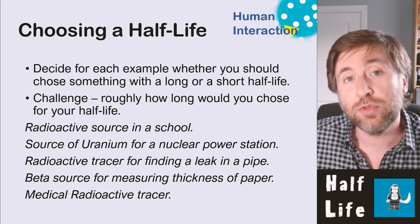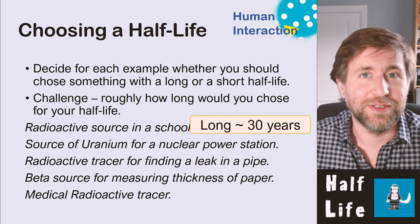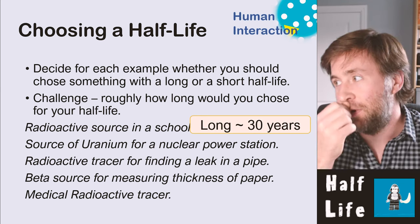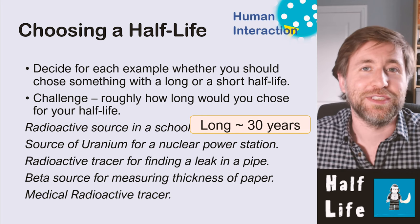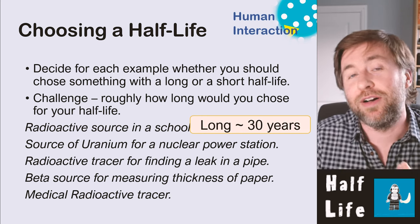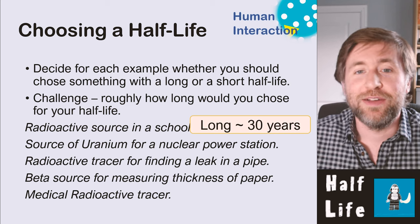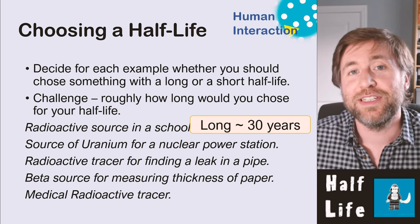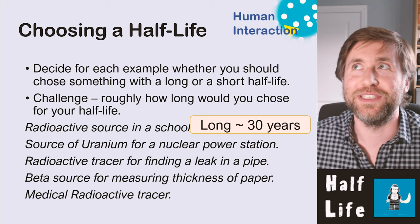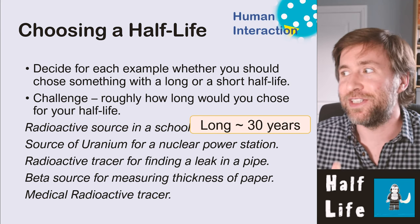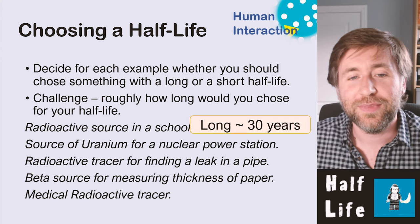For a radioactive source in a school, you'd want a long half-life — somewhere around 30 years — long enough to last for a good number of years. Most radioactive sources in schools have a half-life of about 30 years. Some have only about 5 years; Cobalt-60 has a half-life of 5 years, and most Cobalt-60 sources in schools have been sitting in the cupboard for about 50 years — they've halved 10 times and are basically no longer radioactive.